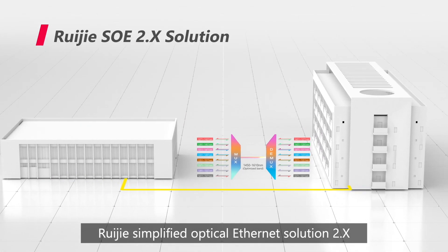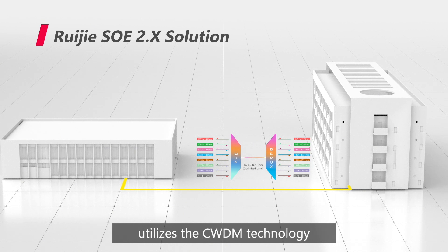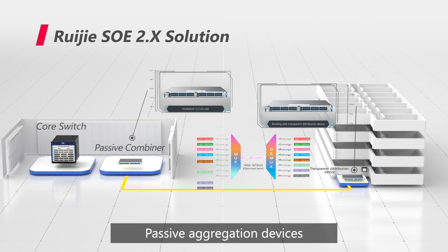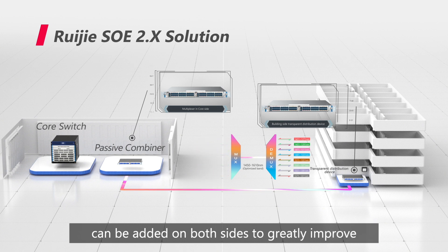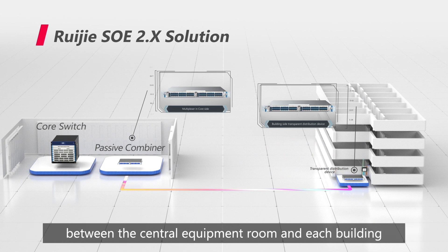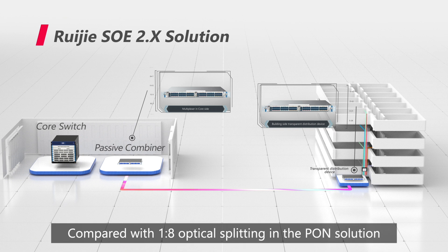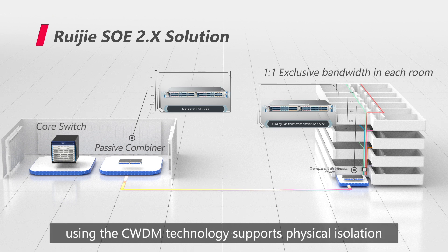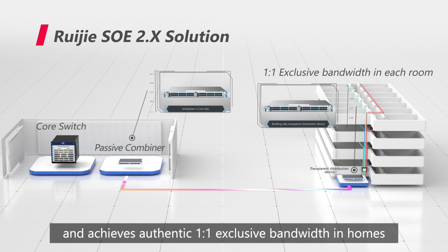The WayGS Simplified Optical Ethernet Solution 2.X utilizes CWDM technology. Passive aggregation devices can be added on both sides to greatly improve transmission efficiency and substantially reduce the costs of wiring between the central equipment room and each building. Compared with 1:8 optical splitting in the PON solution, the simplified optical Ethernet solution using CWDM technology supports physical isolation and achieves authentic 1:1 exclusive bandwidth.